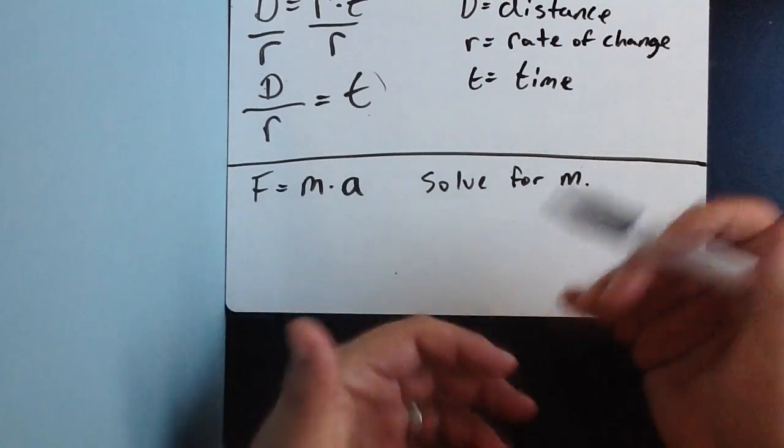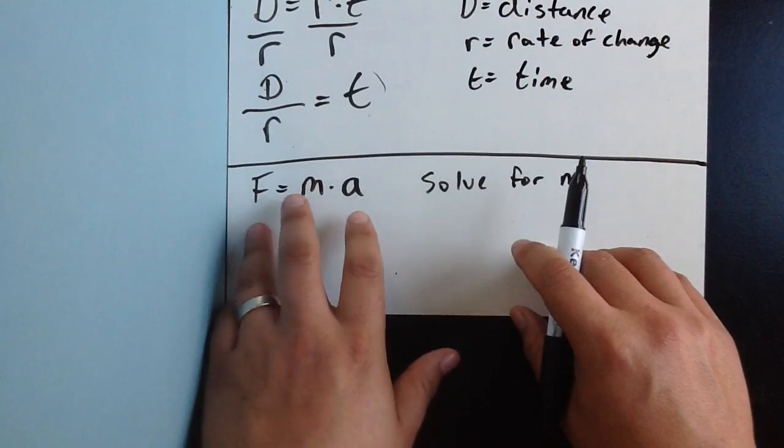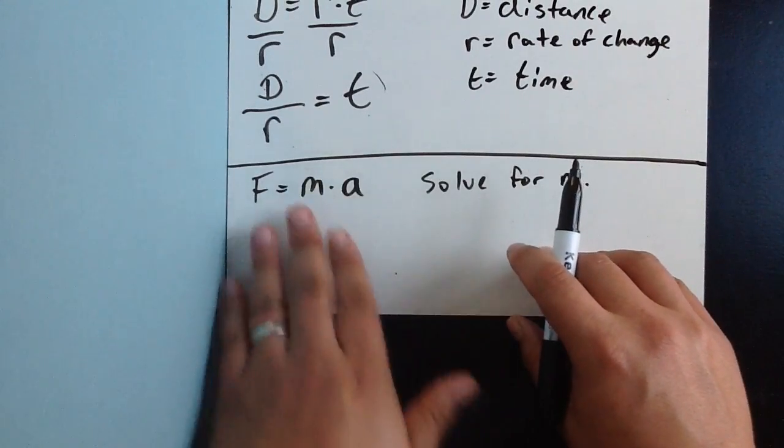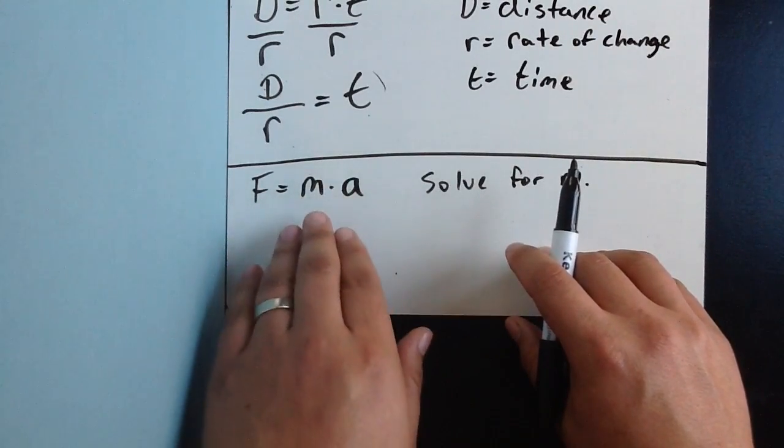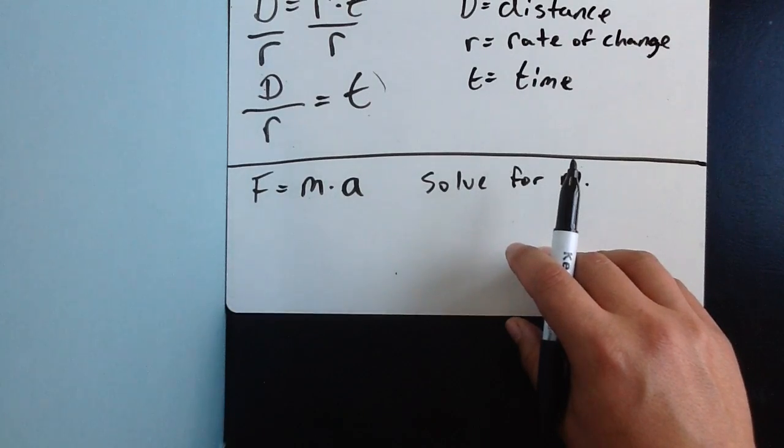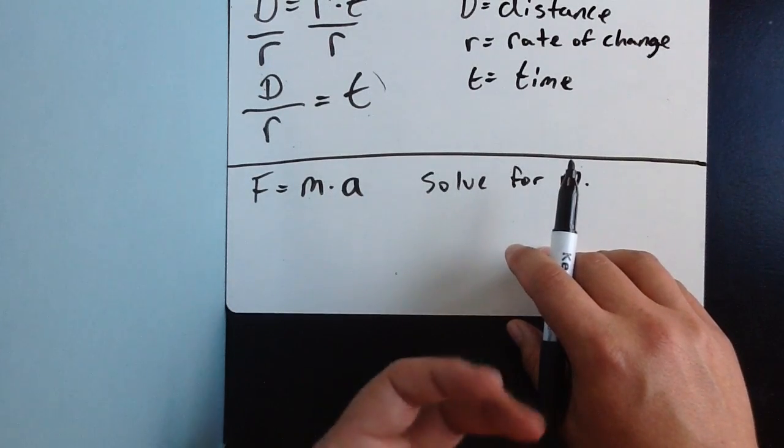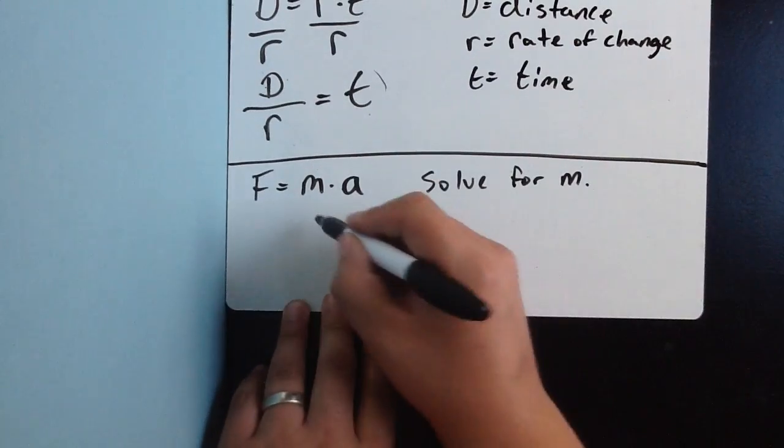Again, stories where they give us certain information and we have to figure other information that's missing. We have a little trick where we can rewrite the formula so that it's set up so we can just plug in the information given.